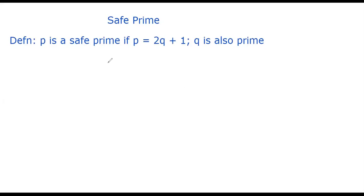A number p is called a safe prime if p can be written as 2 times q plus 1, and q must also be a prime number. For example, let's say q to be 3. 3 is a prime number. Then p will be 7. Then we can say p is a safe prime.